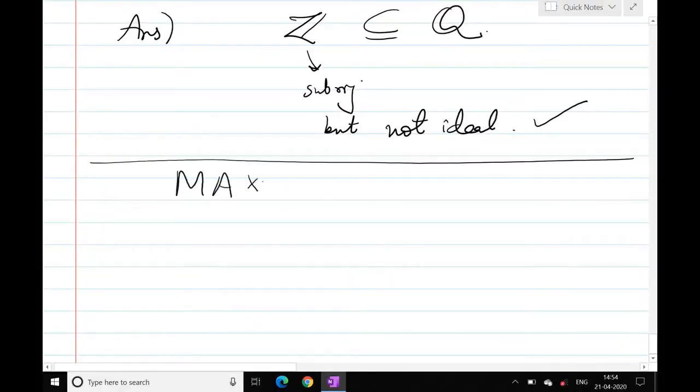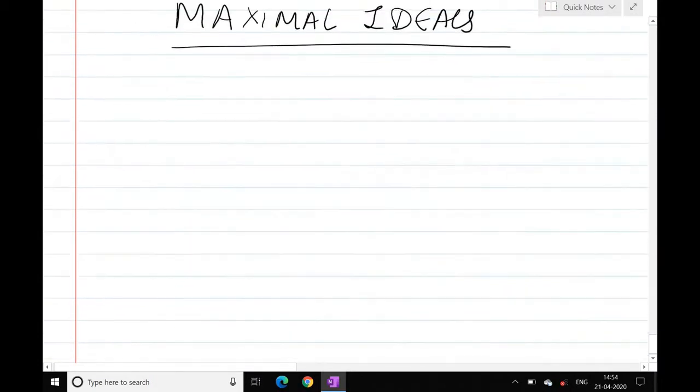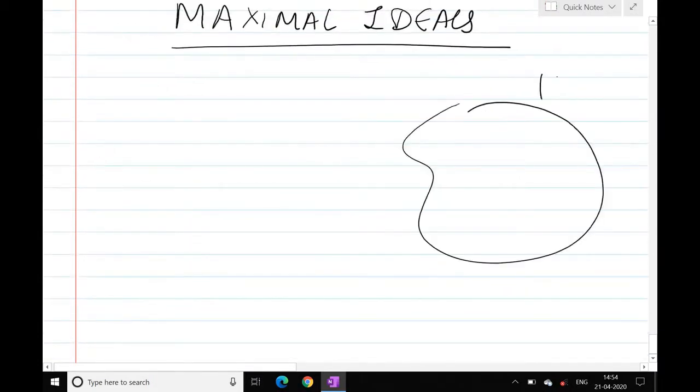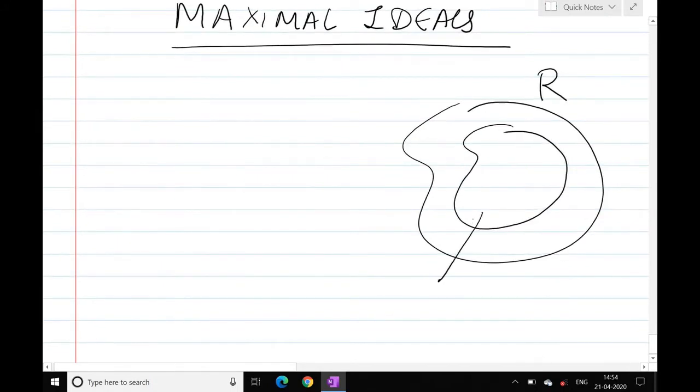This is about maximal ideals. So I will say that R is a ring, M is, first of all M is an ideal, and with maximal ideal.